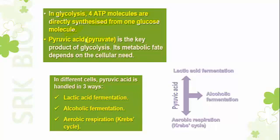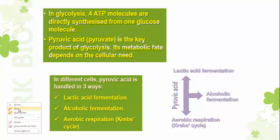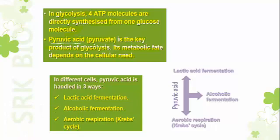Pyruvic acid or pyruvate is the key product of glycolysis, and its metabolic fate depends on cellular need. How many ATP molecules are directly synthesized during glycolysis? Four ATP molecules are directly synthesized. The fate of pyruvic acid depends on the type of respiration.